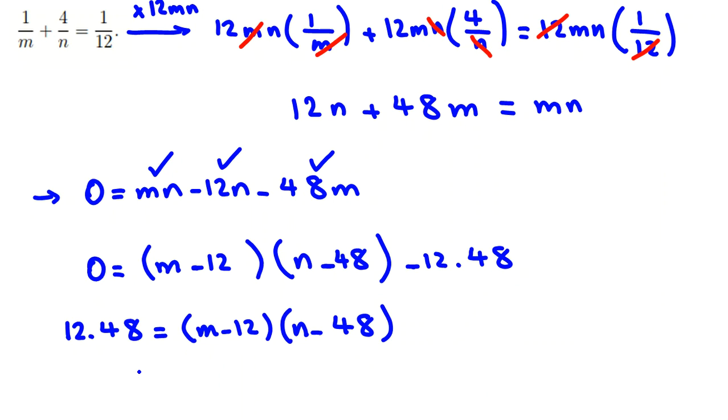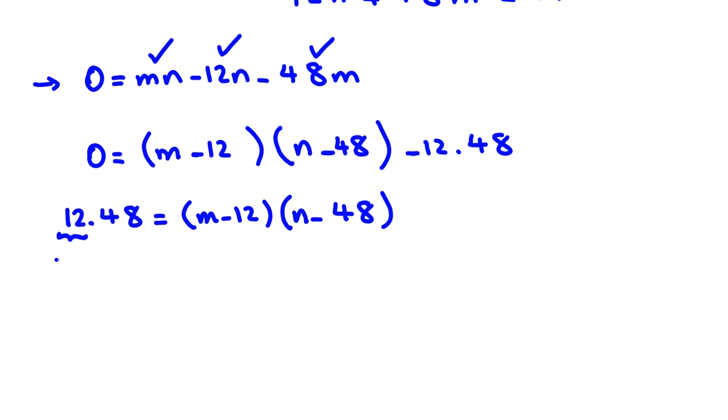So here I consider 12 is 4 times 3, 48 is 16 times 3. So 16 times 4 is 64. It's 2 to the 6. 3 times 3 is 9. Equal to (m - 12) times (n - 48).